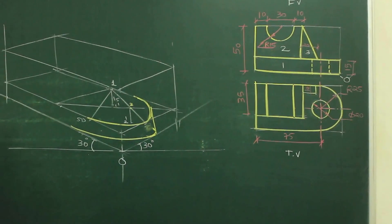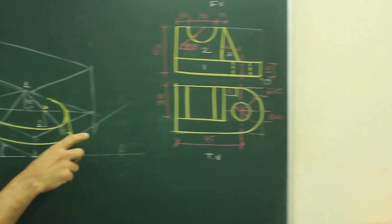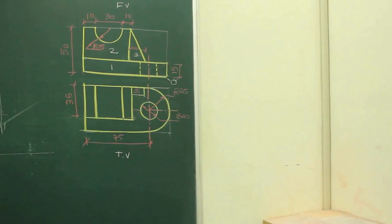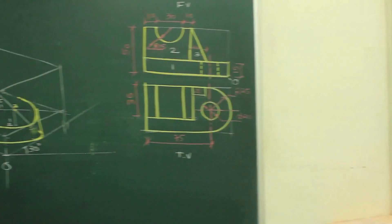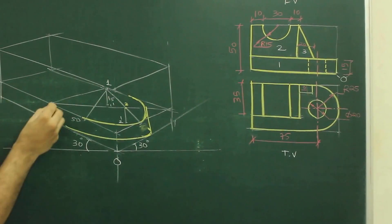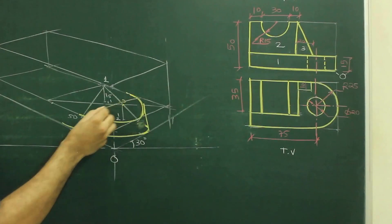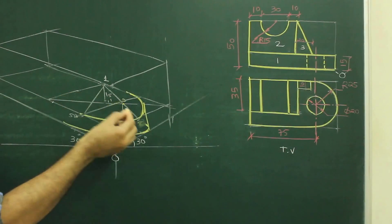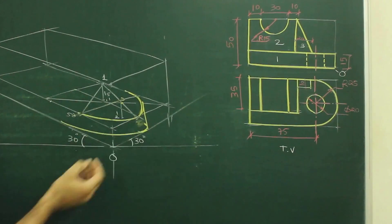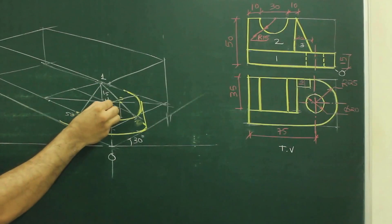Now if you see, there is a radius 10 also. If you see the main diagram, there is diameter 20. So what we need to do? First, we need to find out the midpoint of this rhombus. So we will take 25 from here, 25 from here, and draw a line. Same way, 25 from here, 25 from here, we'll draw a line. So we'll get the center point.